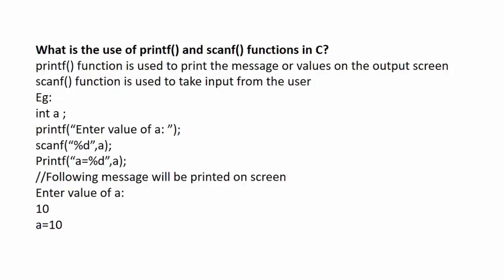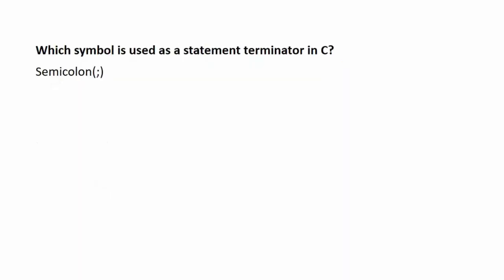Here, %d is a formatting output that is used to tell the compiler that the value of a will be inserted at that position. We can see that the user gets a message 'enter the value of a'. Suppose the user enters 10 as a value, then 'a equals 10' will be printed.